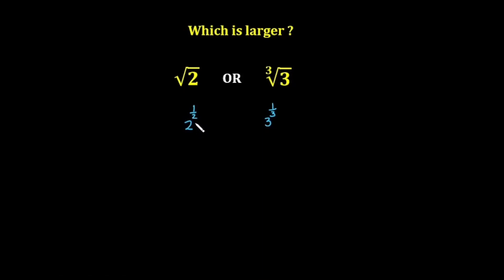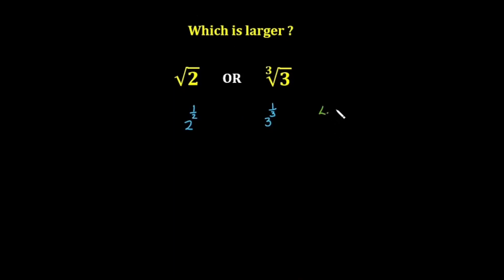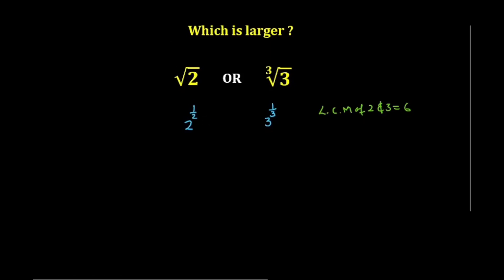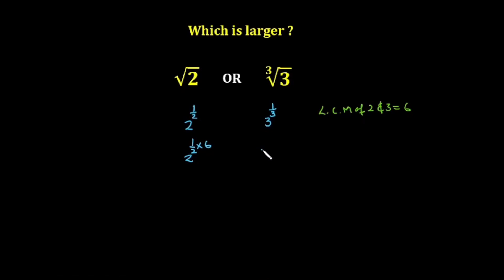So which number do I have to multiply to make the fraction a whole number? The LCM of 2 and 3 is equal to 6. So if I multiply both the fractional exponents by 6, I will change the fractional exponent into a whole number. So 2 raised to the power 1 over 2, times 6, and 3 raised to the power 1 over 3, times 6.